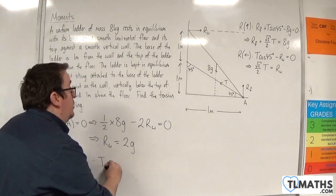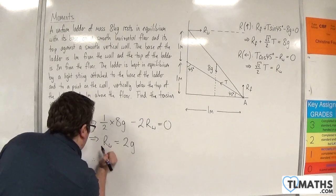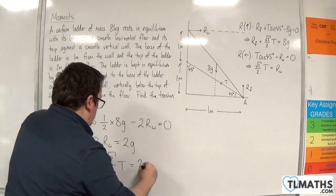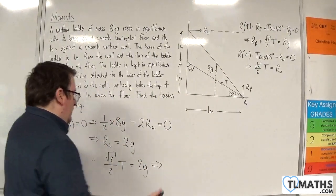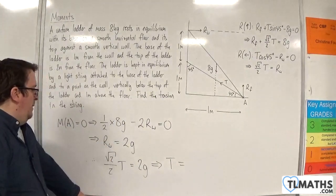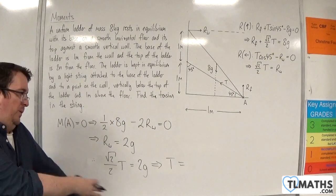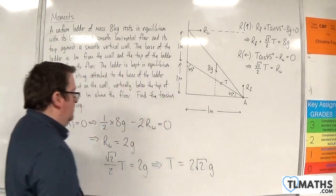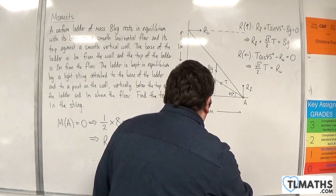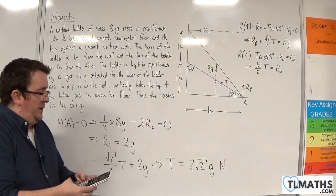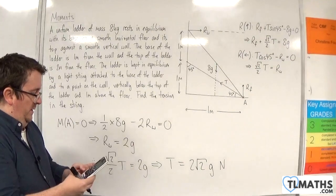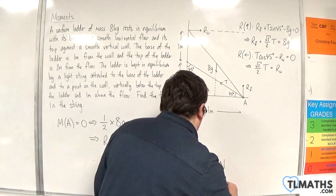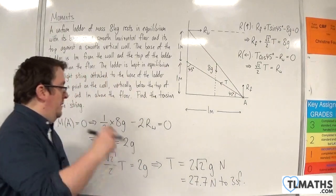So therefore, the tension is, or rather, root 2 over 2 times the tension is equal to 2g. So root 2 over 2 is the same as 1 over root 2, so multiplying both sides by root 2 means we're going to get 2 root 2g. Now, if we want to write that to 3 significant figures, I'll use g as 9.8. So 2 times root 2 times by 9.8, and we get 27.7 newtons to 3 significant figures.